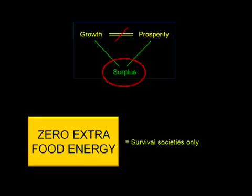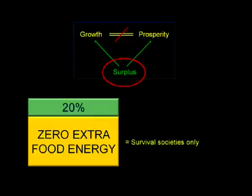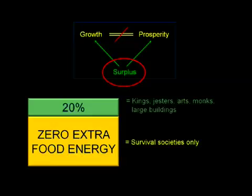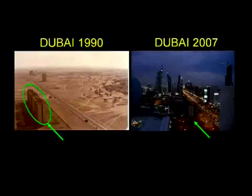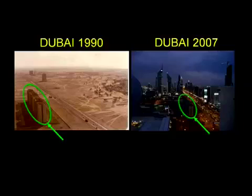This skinny 20% surplus allotment of energy is sufficient to allow rich hierarchies to form, job specializations to develop, and large works of architecture to be built. With sufficient surplus energy, humans can construct remarkably complex creations in short order, as these pictures of oil-rich Dubai taken only 17 years apart attest.